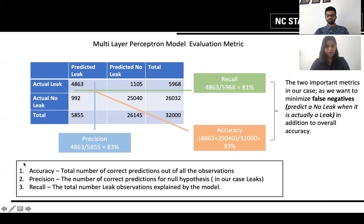Here is the confusion matrix for our model. We have an accuracy of 93%, recall of 81% and precision of 83%. Notice here that it's important for us to reduce the number of false negatives. Predicting a no leak when it's actually a leak will pose a serious threat and therefore recall is an important evaluation metric for our problem.